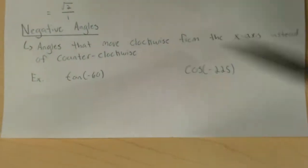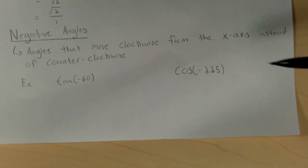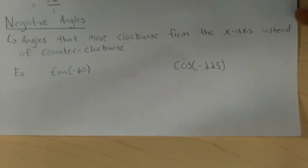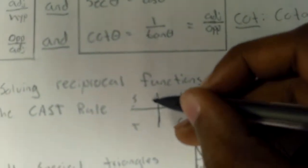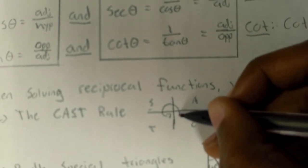Negative angles. Negative angles are just angles that move clockwise from the x-axis instead of counterclockwise. So positive angles would move this way, and negative angles would move this way.